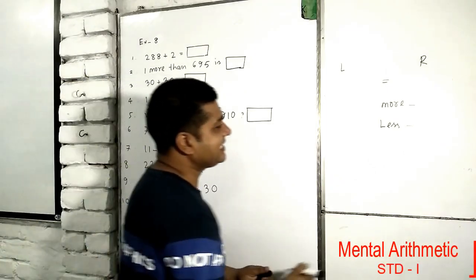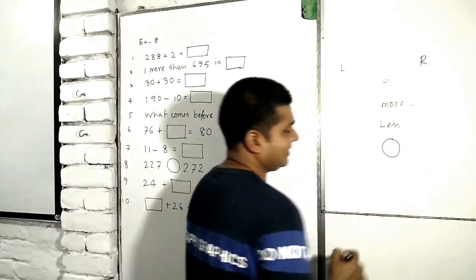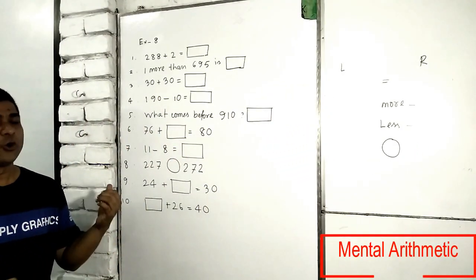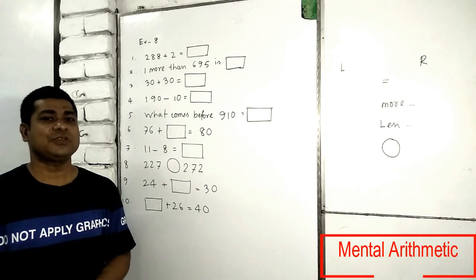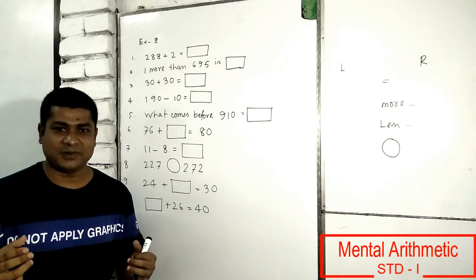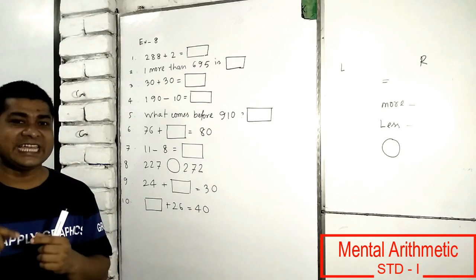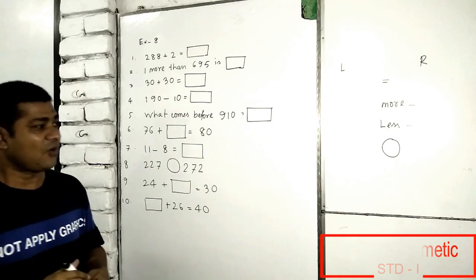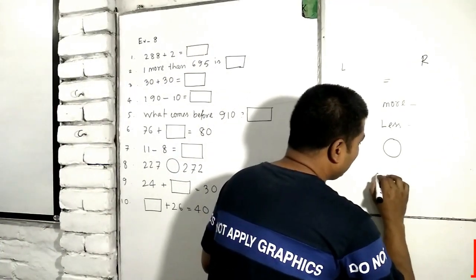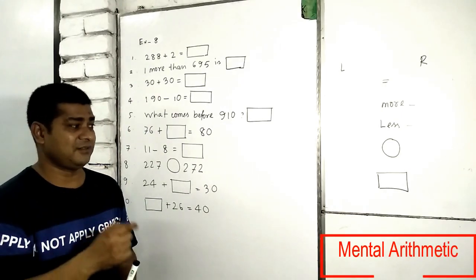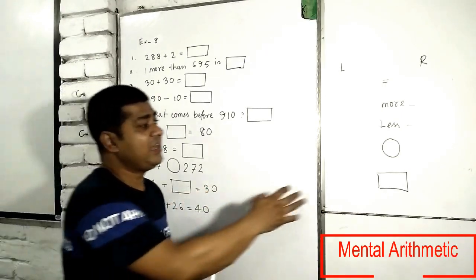Also we are getting a circle in the mental arithmetic. When you will get circle, you have to use symbol, no number, no digit. You must use symbol only. When we get the box, we will write digit or number answer there. But when we will get circle, we must use any symbol.